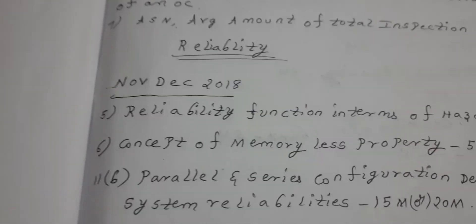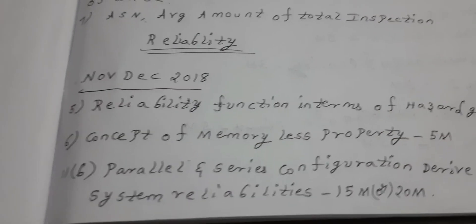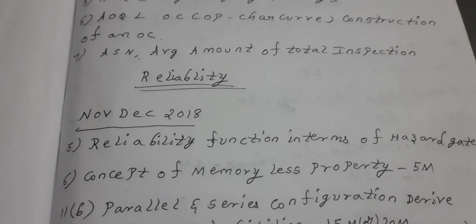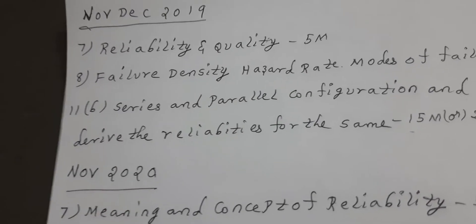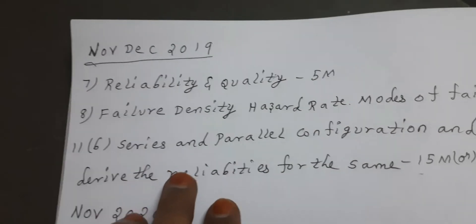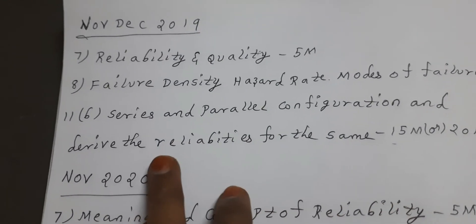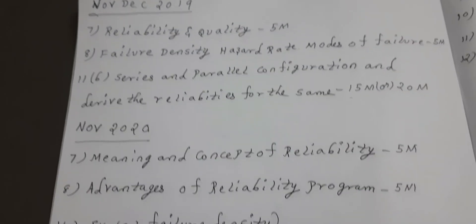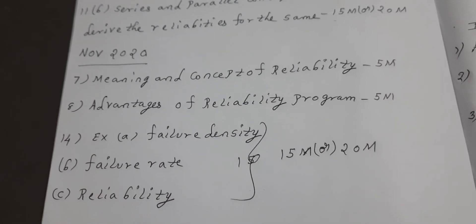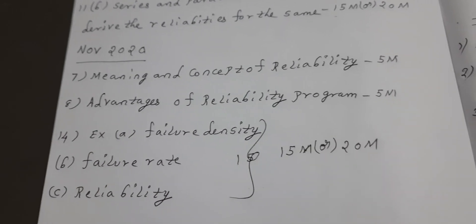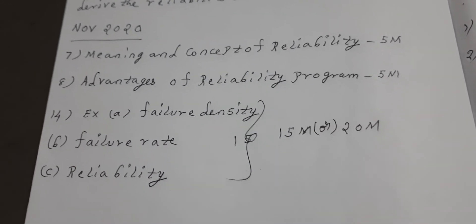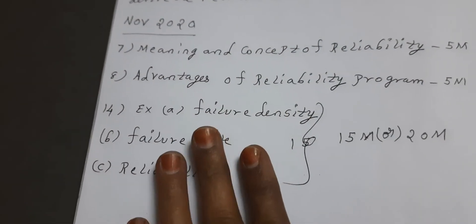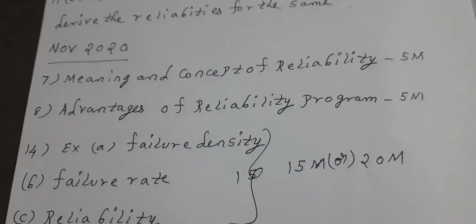Here is the 2018 paper. In this chapter, November/December 2019. Questions number 7, 8, 11. Next, number 20. Okay, 5 marks. And this is 15 or 20 marks. So you have to concentrate more on these.